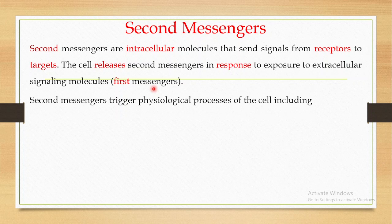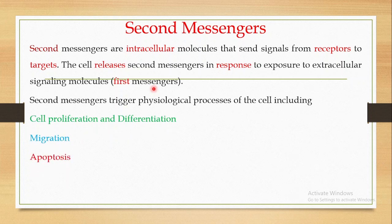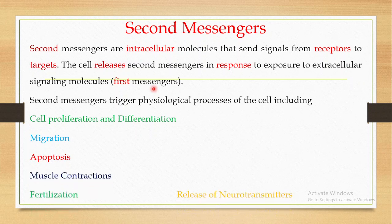The second messengers trigger different kinds of physiological processes in cells — for example, cell proliferation and differentiation, migration, the process of apoptosis, muscle contraction, fertilization, and the release of neurotransmitters.